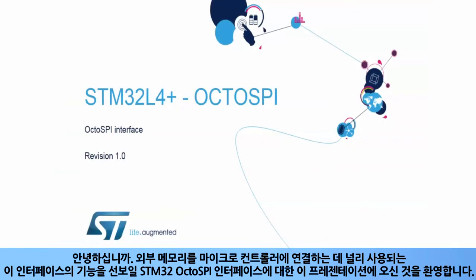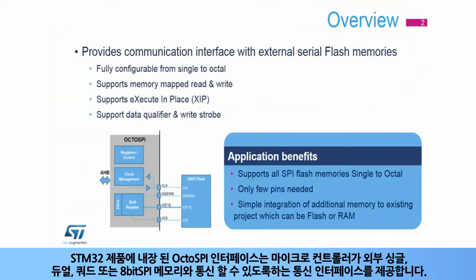Hello, and welcome to this presentation of the STM32 OctoSPI interface, which will present the features of this interface. It is widely used to connect external memories to the microcontroller. The OctoSPI interface, integrated inside STM32 products, provides a communication interface allowing the microcontroller to communicate with external single, dual, quad, or octal SPI memories.